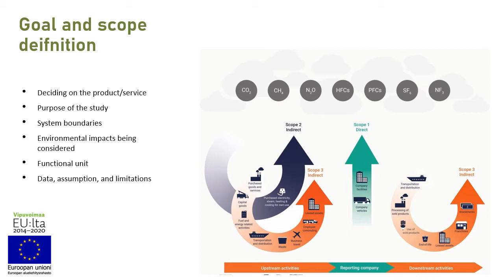We also define our functional unit, which is how we express the result so we can compare results fairly and in a way that represents the function of our product properly. For example, if we want to compare packaging made of plastic versus glass for milk, the functional unit would be per liter of milk held by the container. In this stage, we also define what kind of data we need, what assumptions we make, and what limitations apply.